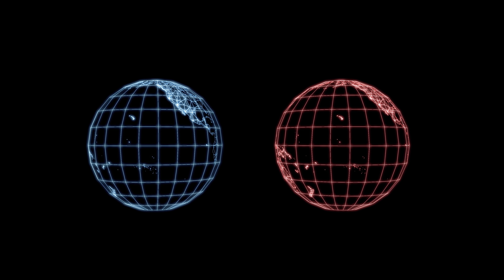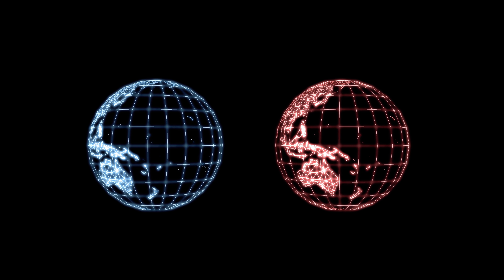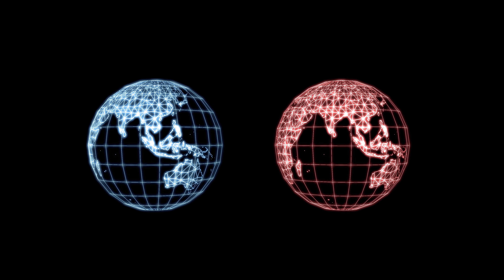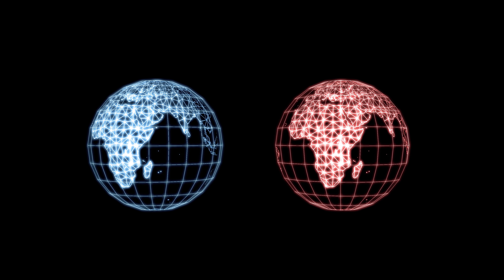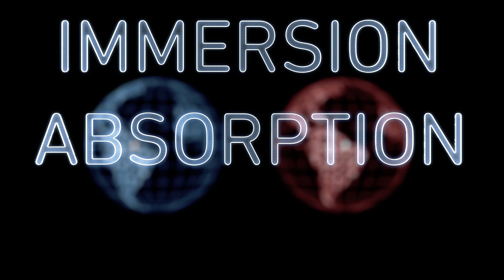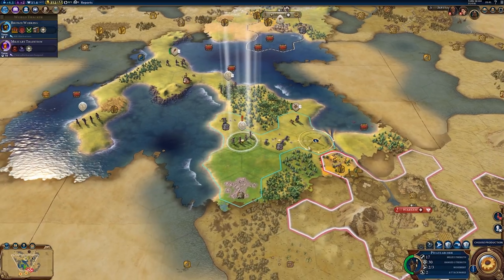There are two worlds, two realities: the primary world, which is where the simulation is being run, and the secondary world — the simulated universe we occupy — which to us is the only one. When creating this world, there are three steps to successfully making the user believe it to be real: immersion, absorption, and saturation. Think about video games like Age of Empires, Civilization, or The Sims. They're about recreating or mimicking reality — reliving past events or creating new ones.